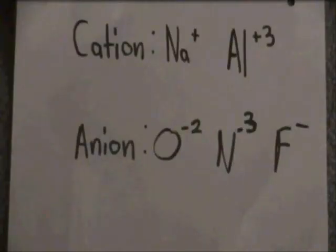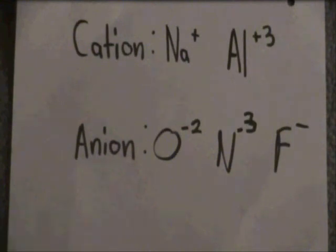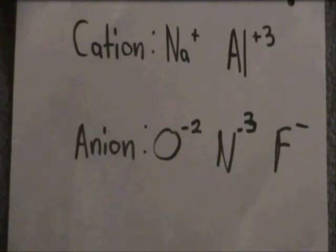Now we will briefly talk about cations and anions. Cations are positively charged ions as seen on sodium and aluminum which are represented as the plus signs. Anions are negatively charged ions which are represented in oxygen, fluorine and nitrogen by the negative sign.